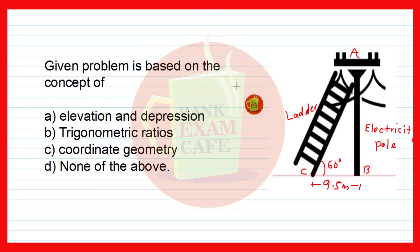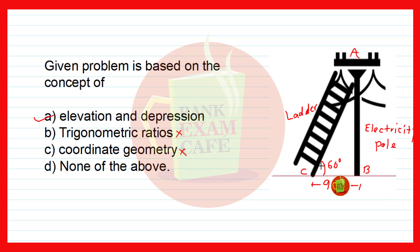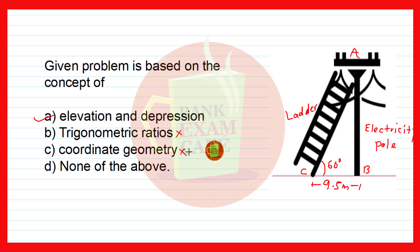The first question asks what concept this problem is based on — elevation and depression, trigonometric ratios, coordinate geometry, or none of these. It is not a coordinate geometry question. It is not based purely on trigonometric ratios, but it is based on the angle of elevation and depression, since this is an angle of elevation. So option A — elevation and depression — is the correct option.